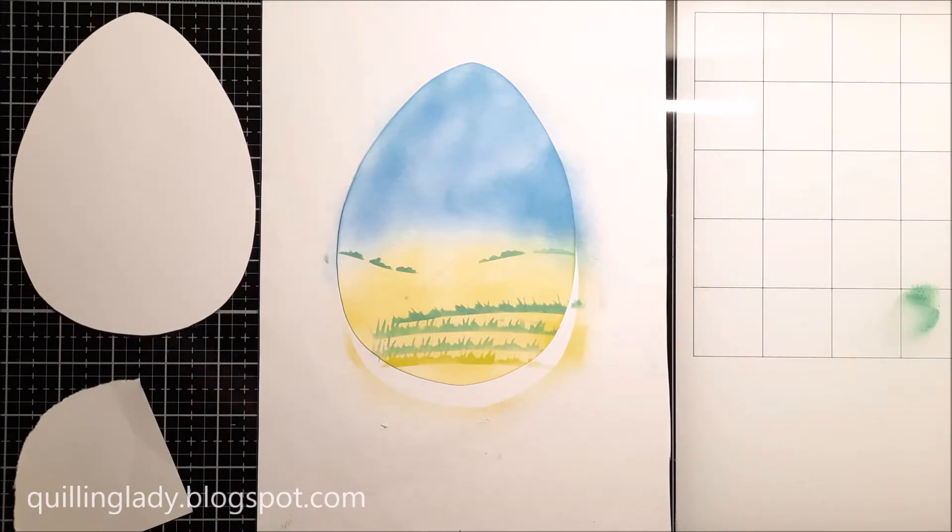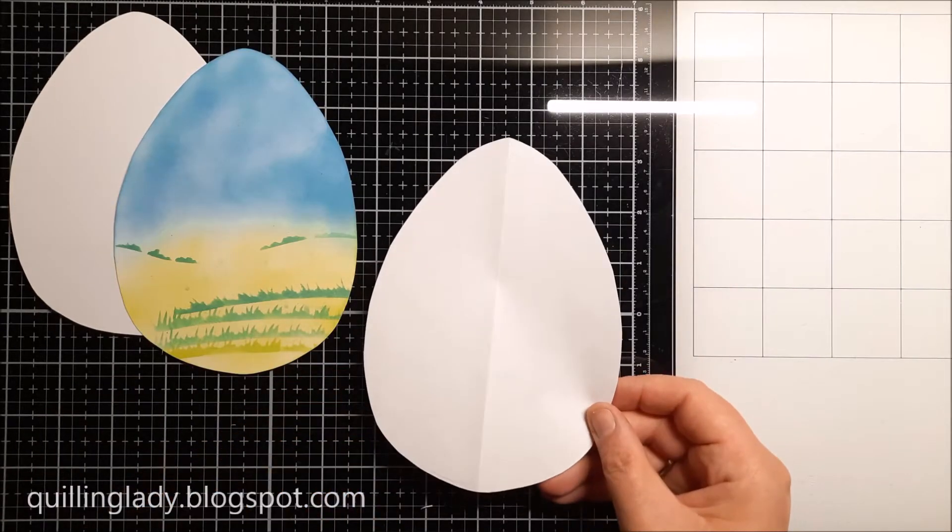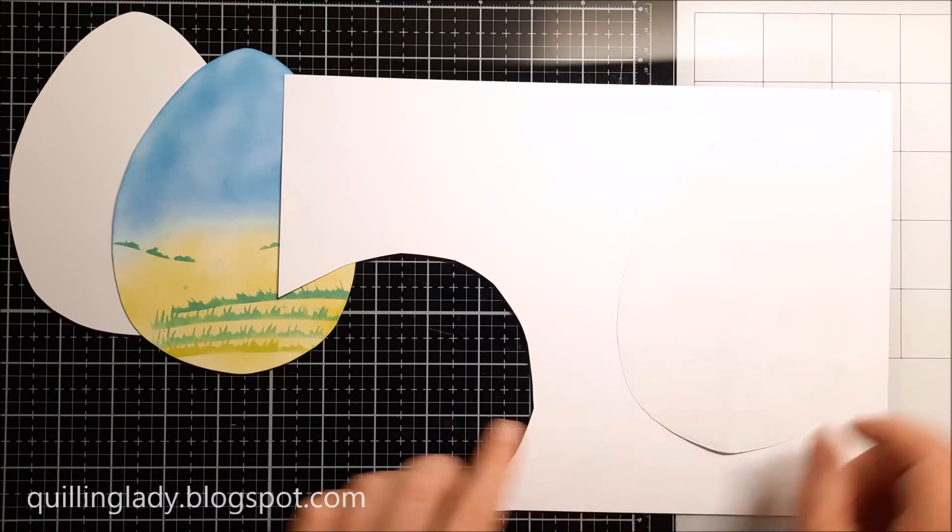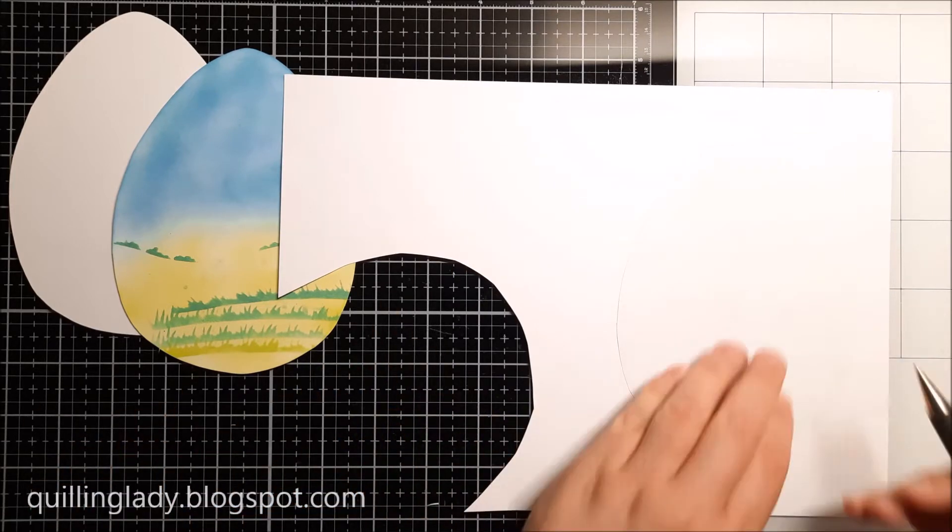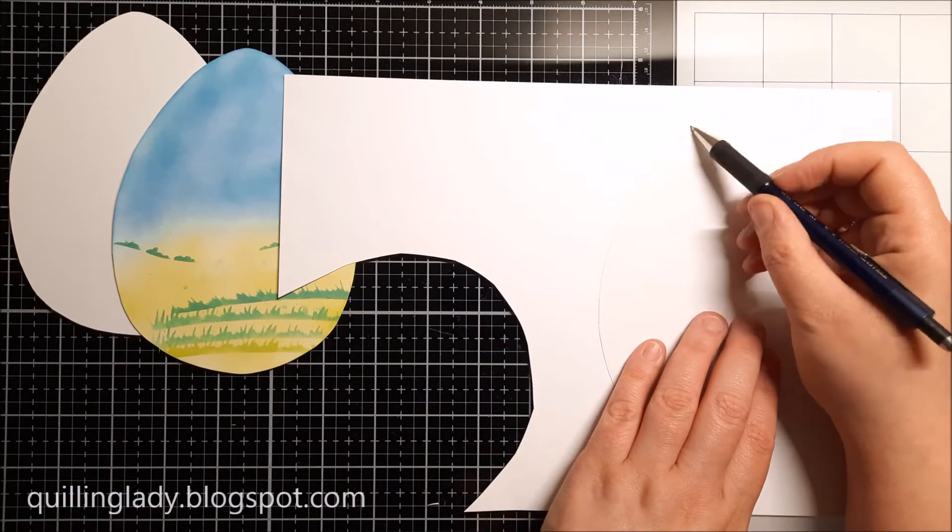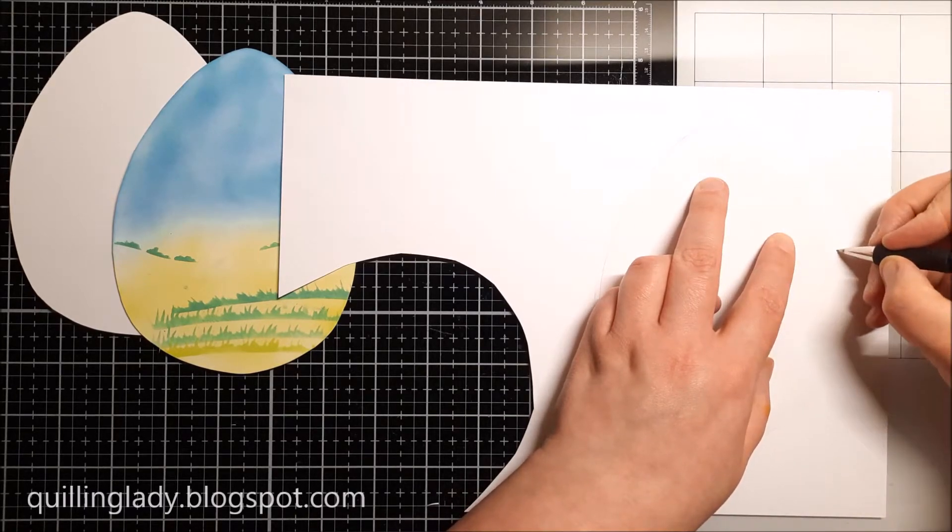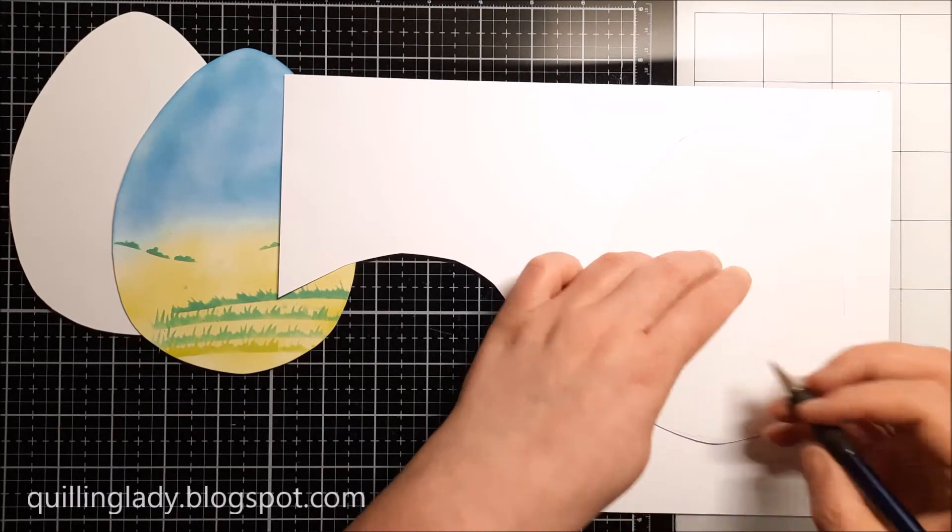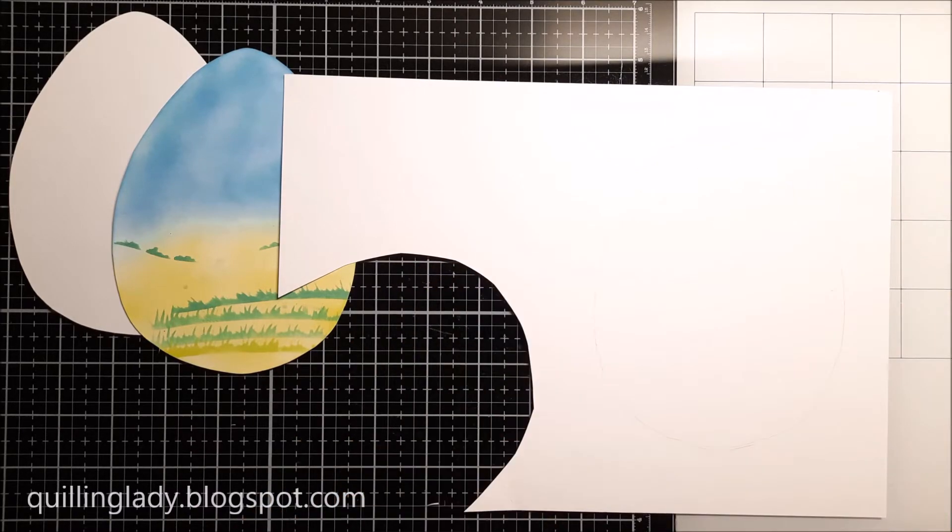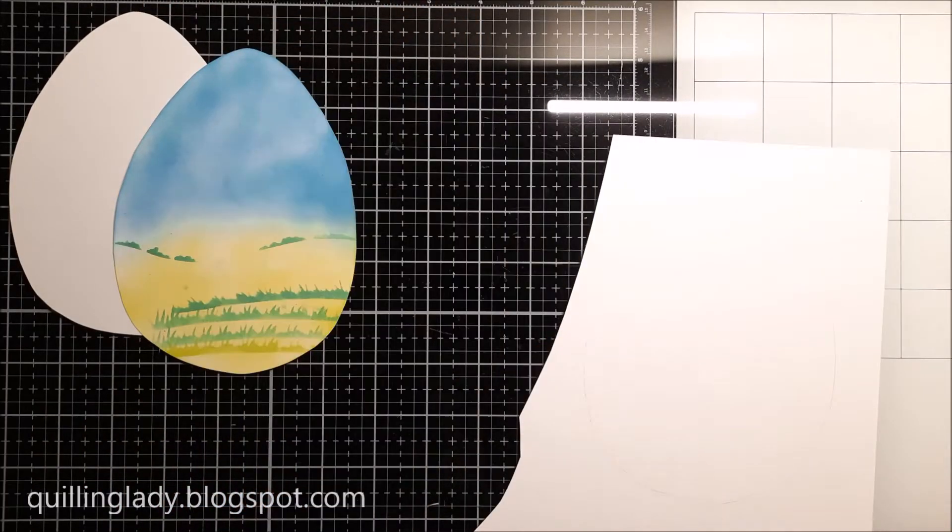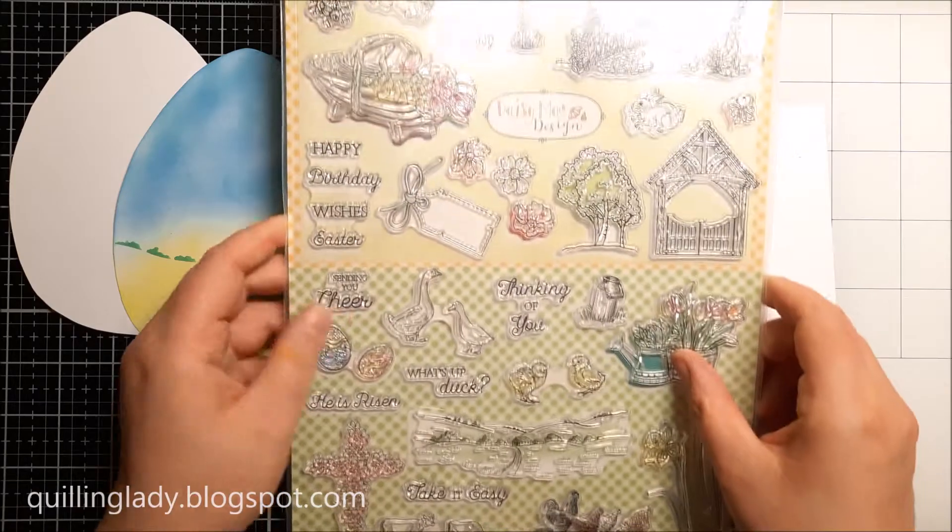Now I'm using another 300 gsm scrap piece of card and I'm actually going to use my template. This time I'm going to leave a gap so the egg I'm drawing at the moment is going to be slightly bigger.